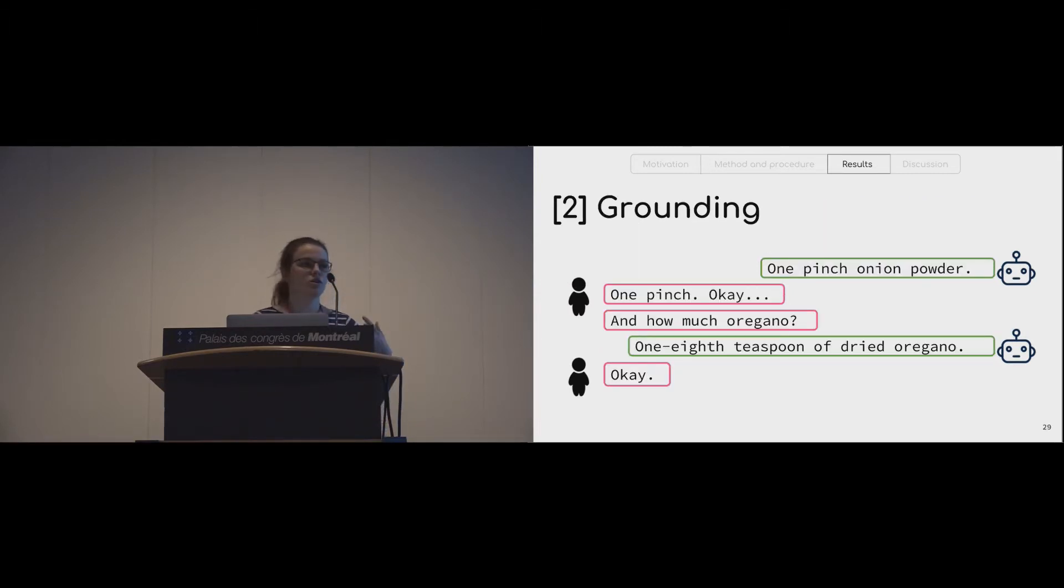In other cases, the behavior that people exhibited through implicit cues did not have any particular actionable intent. For example, in grounding, they would say 'okay, one pinch,' signaling that they have received the information, and that's it. So it's basically a signal of the receipt of information. A good life example of that might be some of you nodding along as I'm speaking right now.